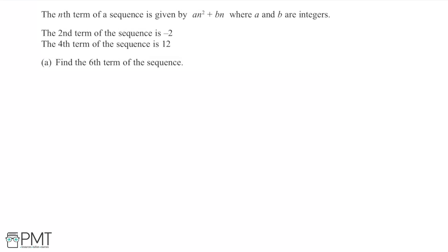In this question we're told that the nth term of the sequence is given by the expression an squared plus bn, where a and b are integers. We're also told that the second term of the sequence is minus 2, and that the fourth term of the sequence is 12, and we need to use this information to find the sixth term. We know the form of the sequence but have two unknowns, a and b.